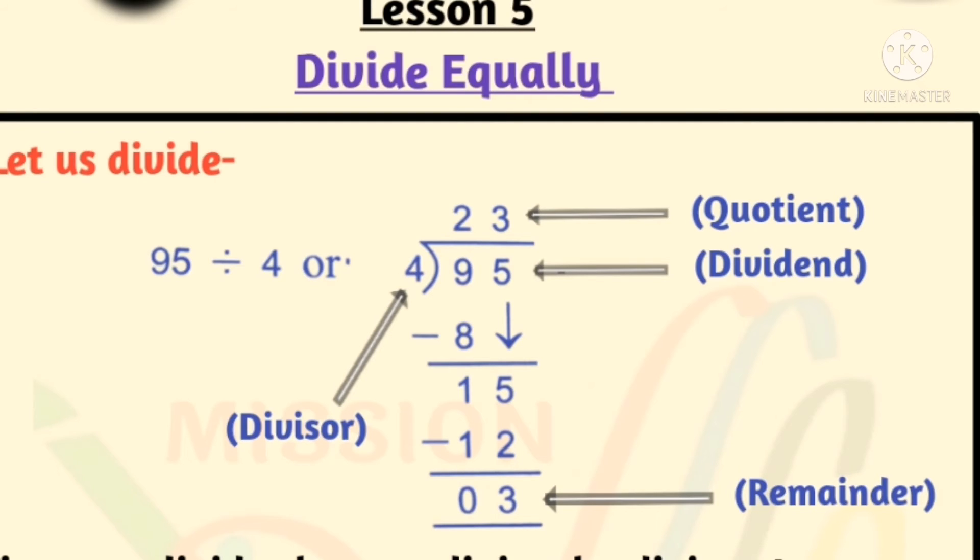Now we write the ones digit 5 of dividend 95 with the remainder 1. After subtracting 8 from 9, remainder is 1. Next to it we write the ones digit 5. Now 15 is obtained.